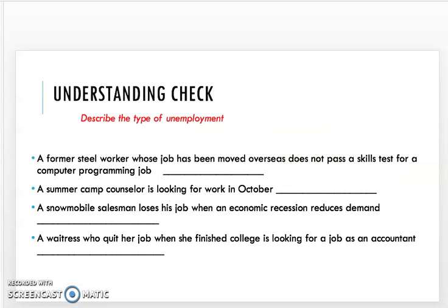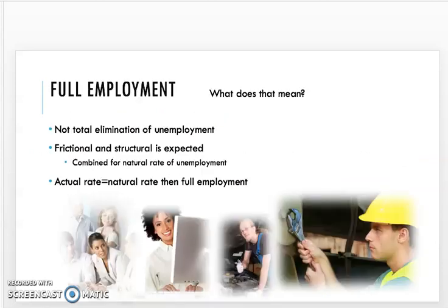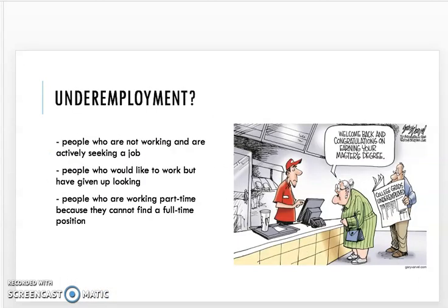Pause your computer here and go through the different unemployment scenarios to make sure you can identify them. Full employment doesn't mean there's no unemployment at all — it basically means the natural rate equals the actual rate. There is also such a thing as underemployment: people who would like to work but have given up looking, or who are working part-time because they can't find a full-time job.